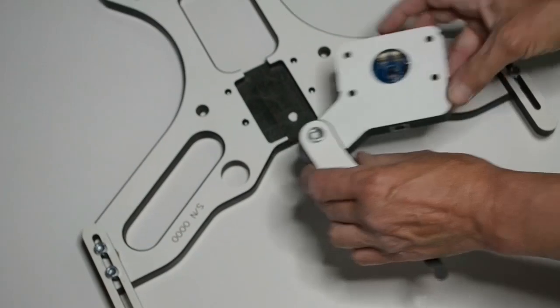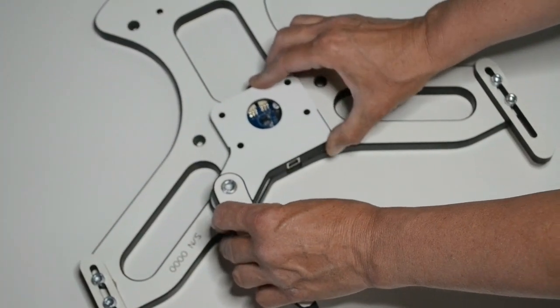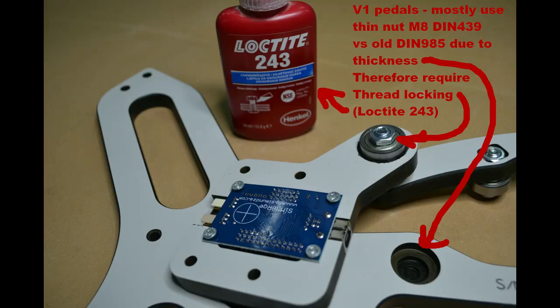After that you can place the electronics on the base plate. Your pedals most likely feature a thin nut like on this picture, therefore it is advisable to use thread locking like Loctite 243.